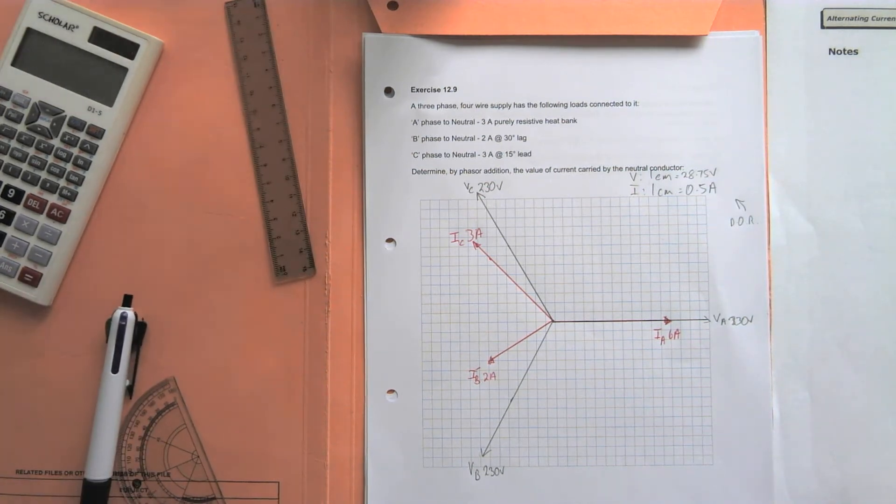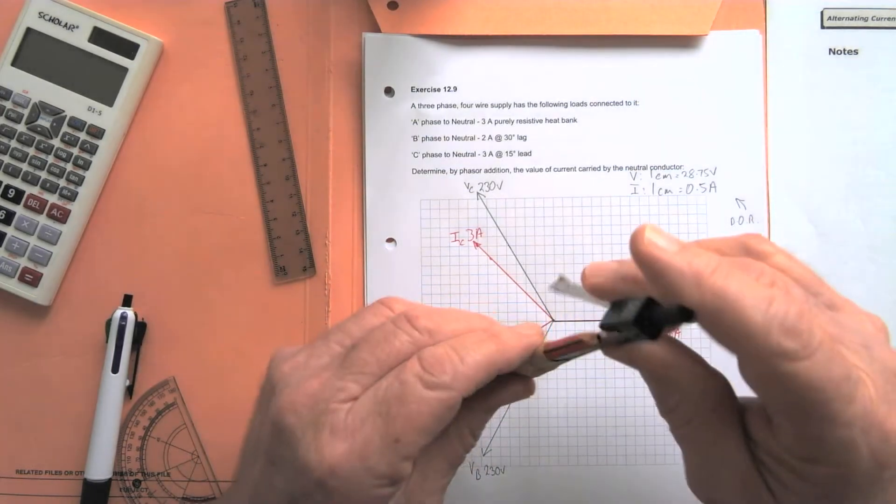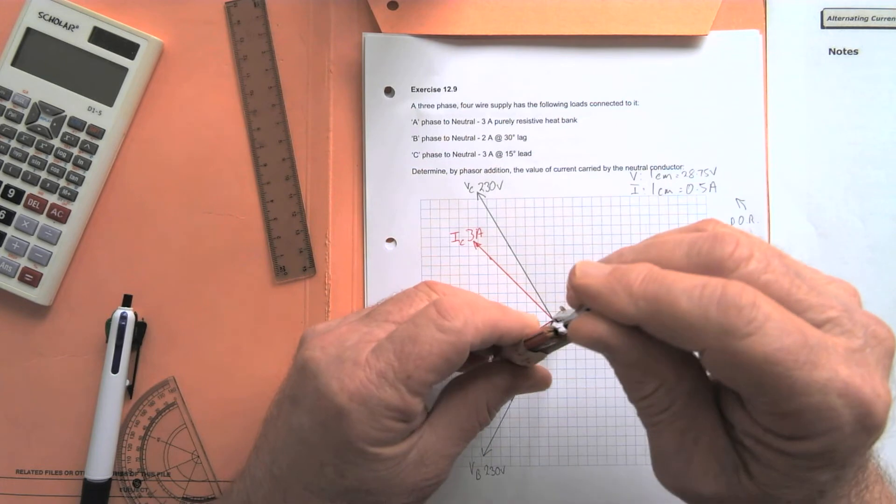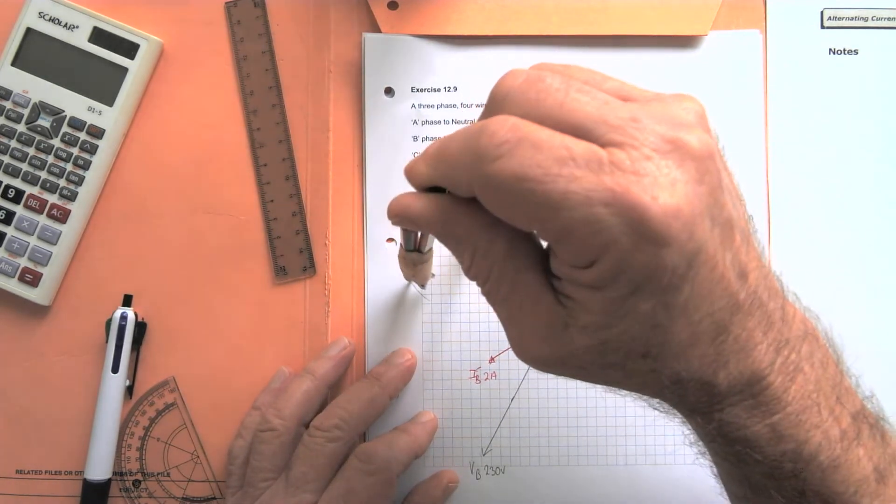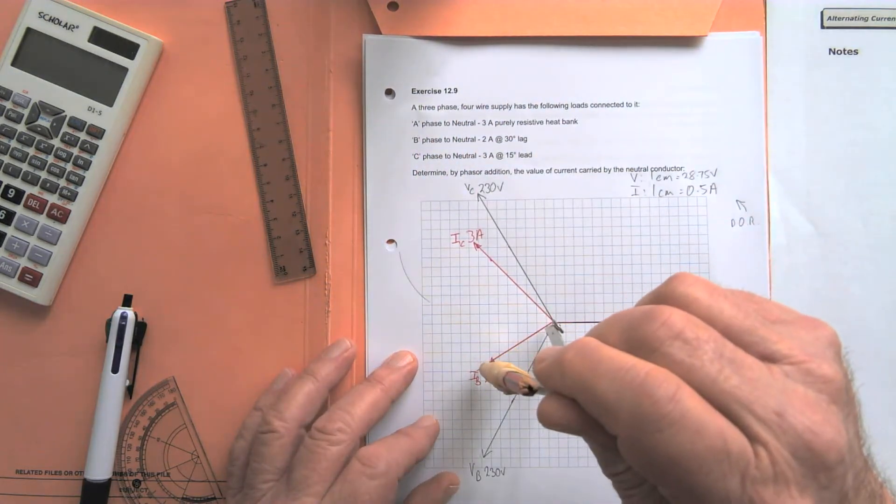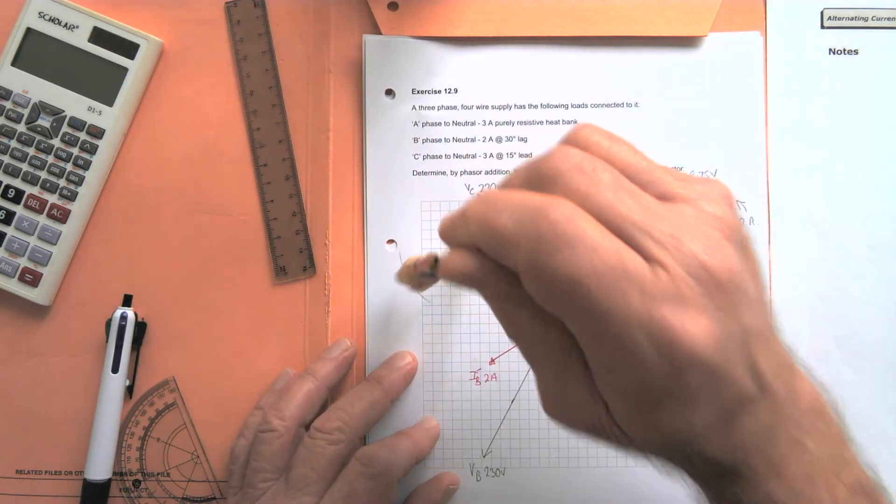So we add these by phasor addition. You can pick any two phases you like. Pick these two and basically make a parallelogram to add the two phases together. So the length of IB is added to the tip of IC.